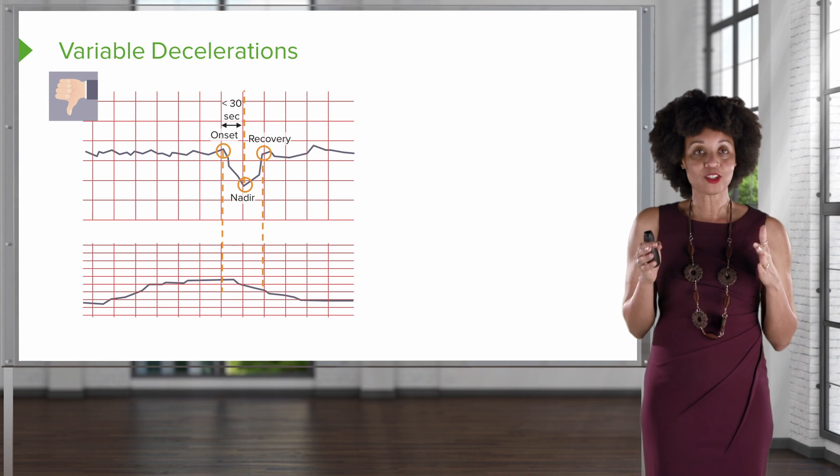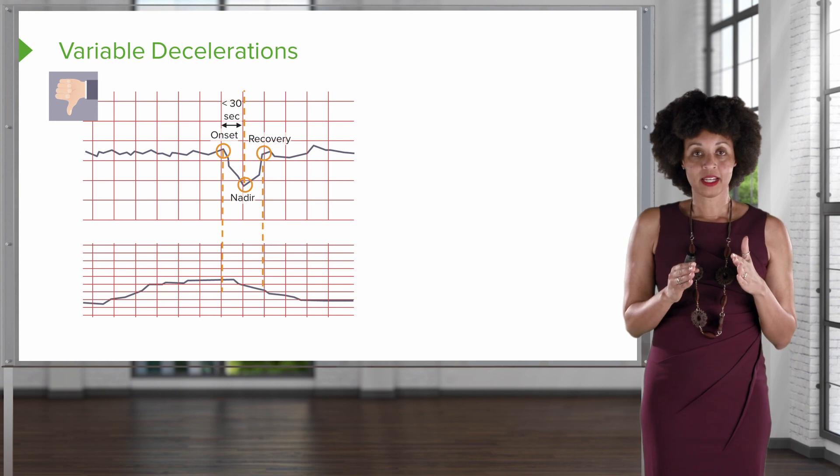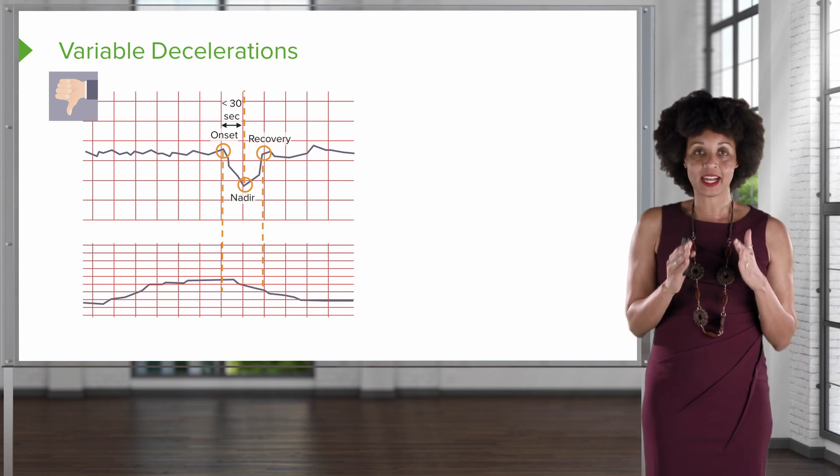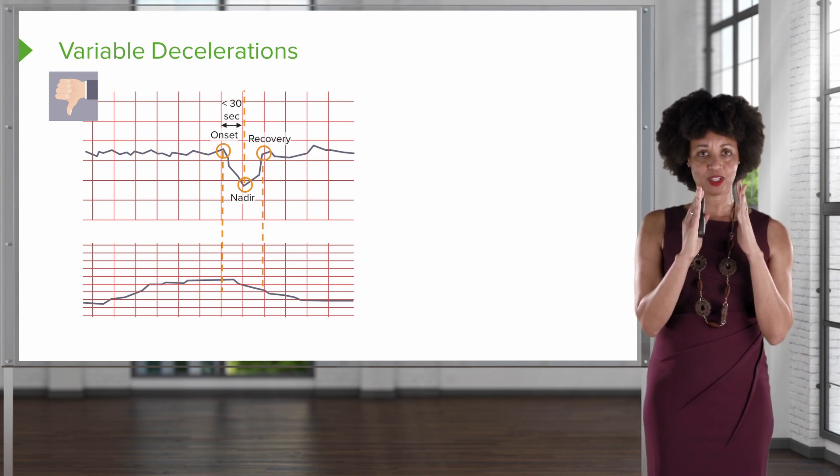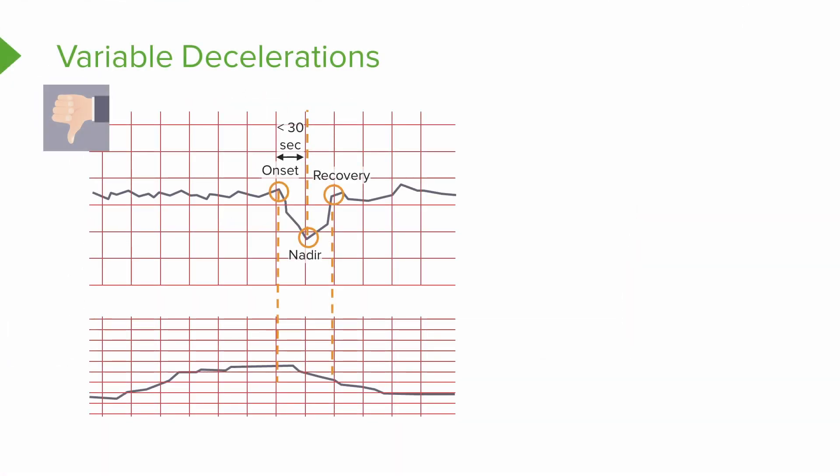Let's look at this third type of deceleration and let's talk again about what is different. Now the first thing you may notice is that it's very short in terms of when it starts and when it gets to that lowest point. That's a very rapid descent. It's less than 30 seconds if you need a quantitative measure. It's not as wide as the early or the late decelerations that we looked at. That is characteristic of a variable decel.